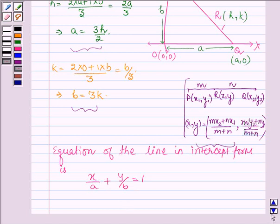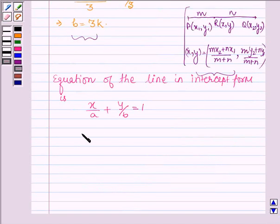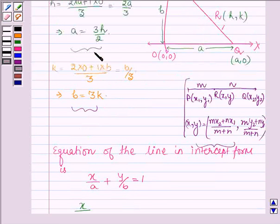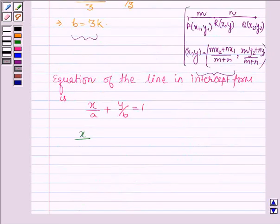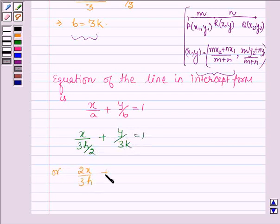Now substituting the values A equals 3h upon 2 and B equals 3k. We have x upon 3h upon 2 plus y upon 3k equals 1, or 2x upon 3h plus y upon 3k equals 1.